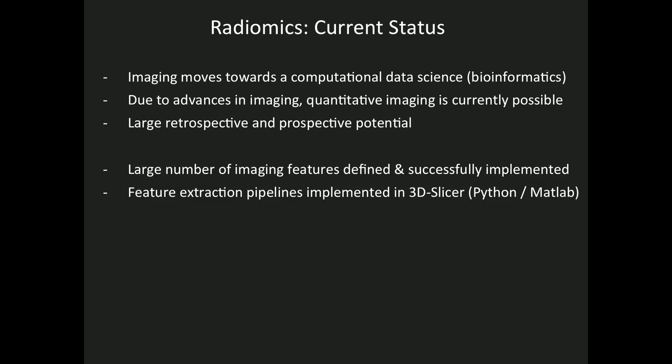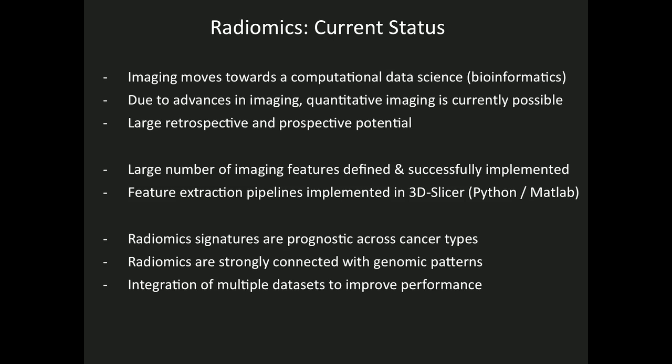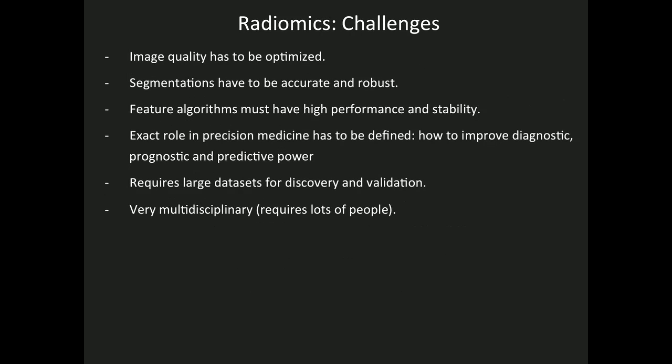A large number of imaging features have been defined and successfully implemented — in 3D Slicer and Python, and we will share this toolbox soon. Radiomic signatures were found to be prognostic across cancer types, with significant associations with different clinical outcomes. We found a strong connection with genomic patterns — different biological patterns drive distinct phenotypes. Integration from multiple datasets and different data types is important: integrating genomic and radiomics data is really crucial.